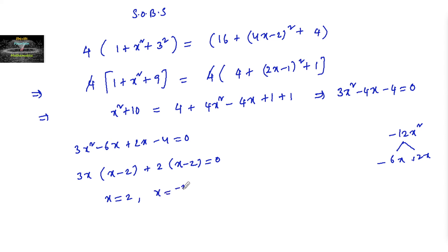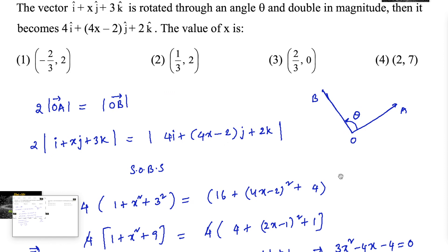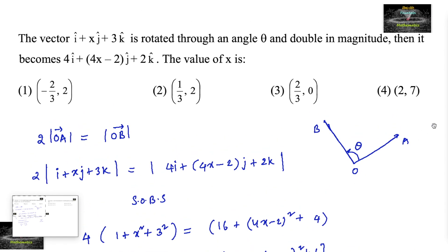So the two values of x are x equals 2 and x equals minus 2 by 3. So we can go with option first.